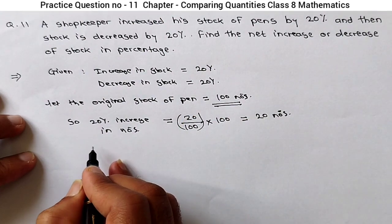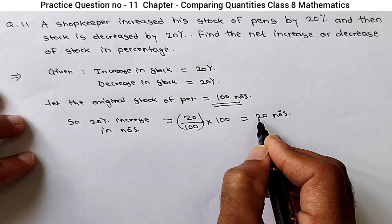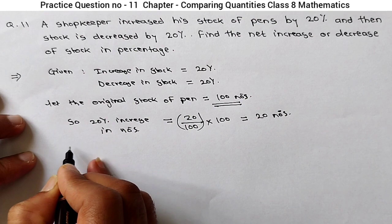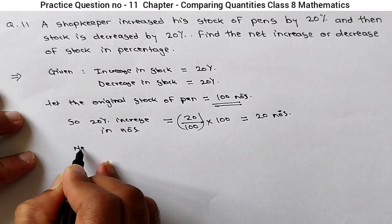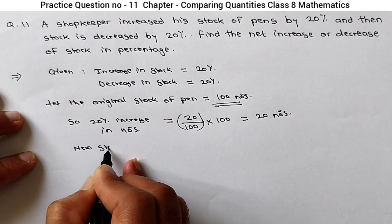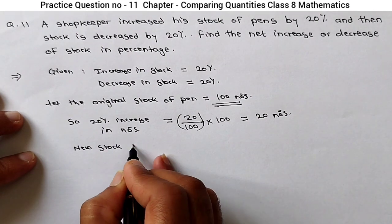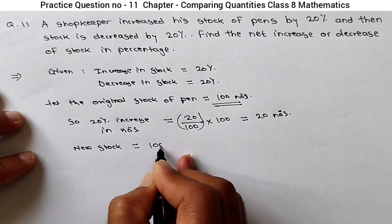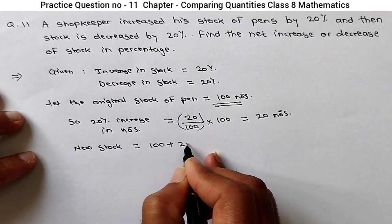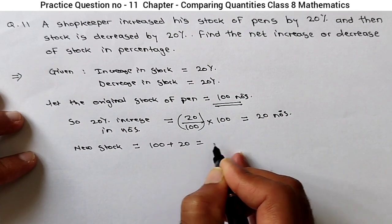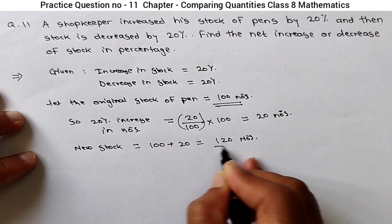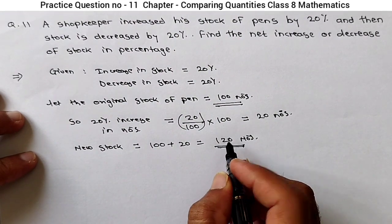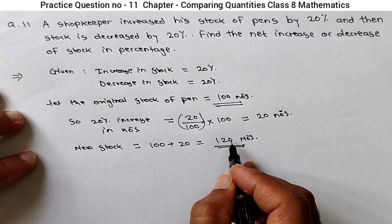So our new stock after a 20% increase in stock will be: new stock after increase in paint equals original stock 100 plus increase of 20 numbers, which becomes 120 numbers. New stock after 20% increase in paint is 120 numbers.